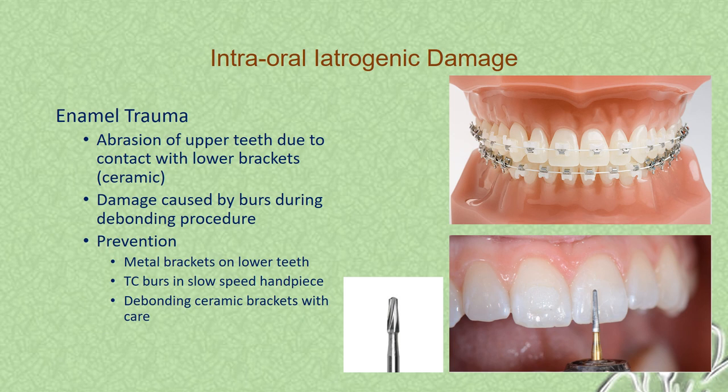As it concerns debonding procedures, tungsten carbide burs in slow-speed handpieces are less damaging compared to high-speed burs. Debonding of ceramic brackets needs to be done with care, as debonding ceramic brackets can be damaging to the enamel.